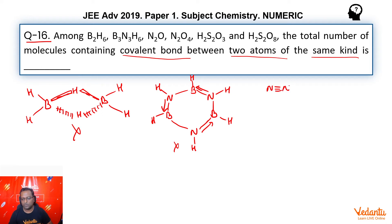N2O structure is this, which also has a resonating structure. The lone pair goes here, then this bond goes here. So here, as you can see, there are bonds between the same kind of atom.